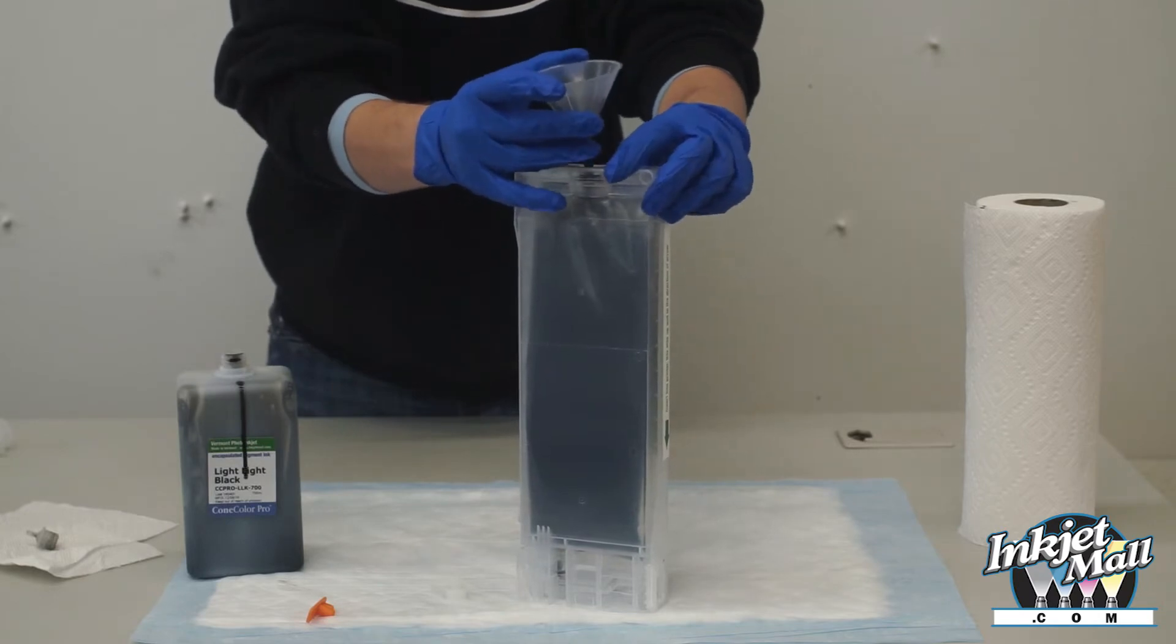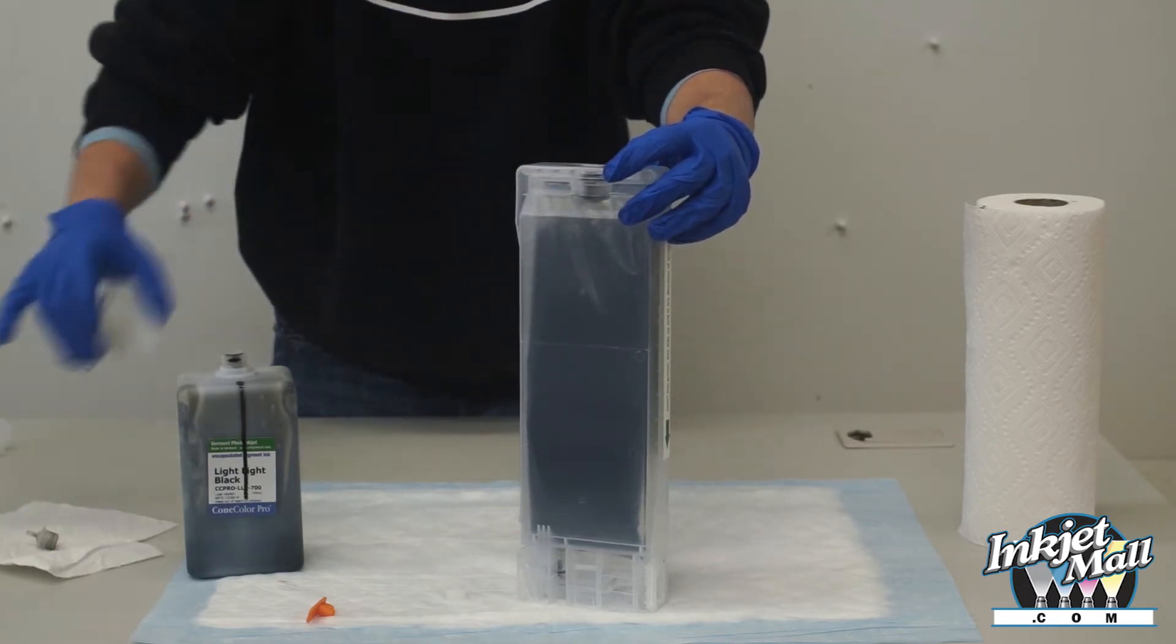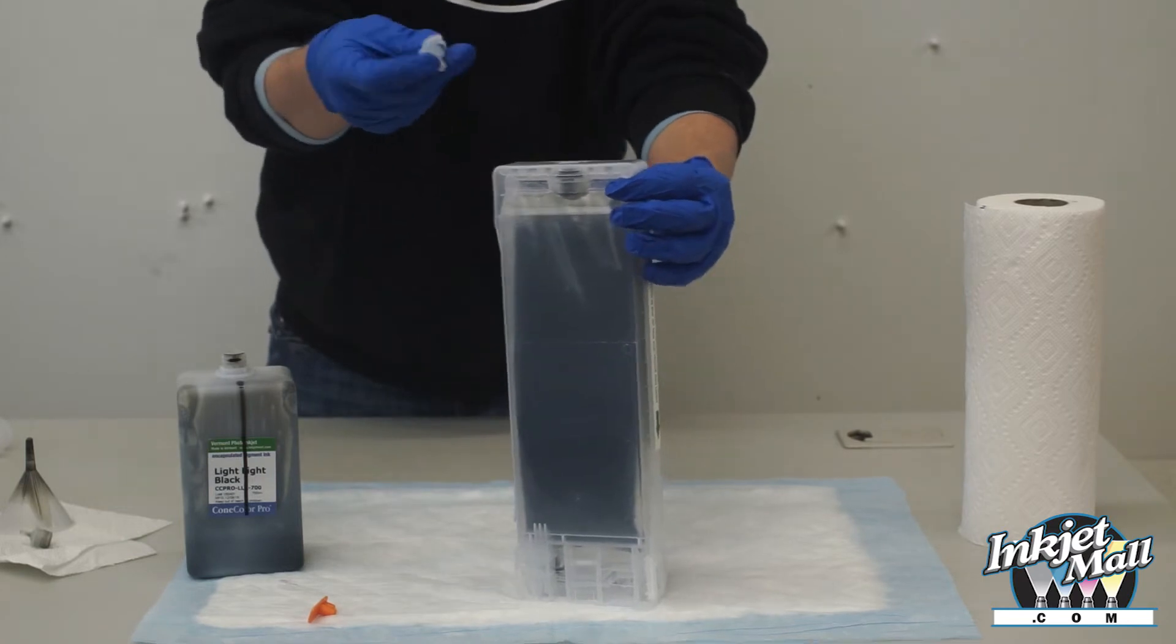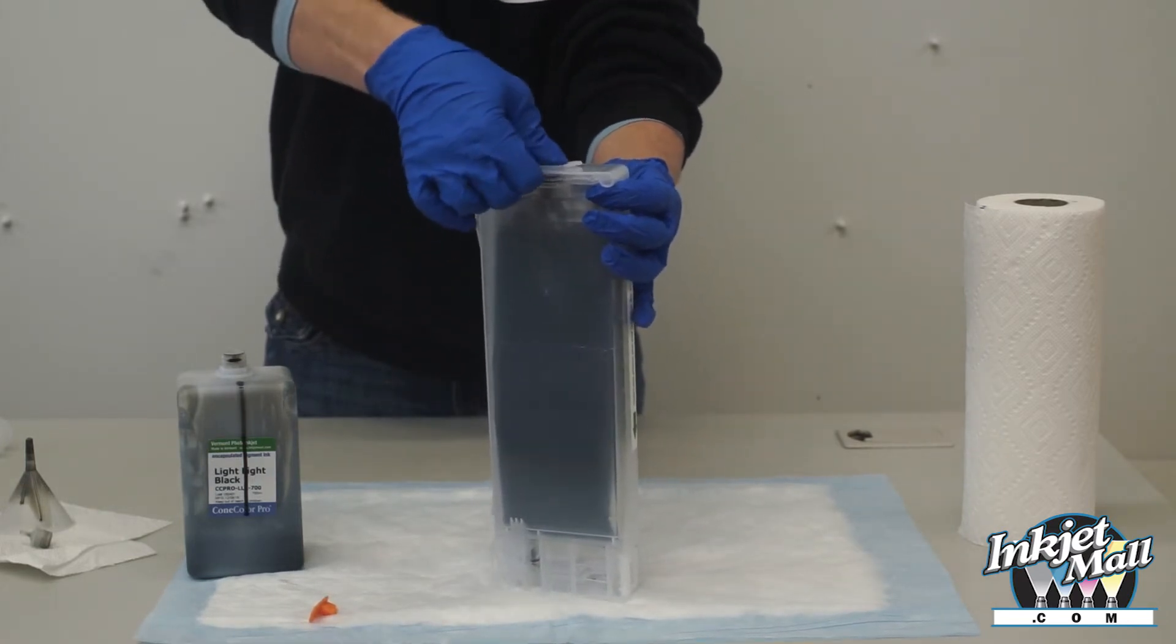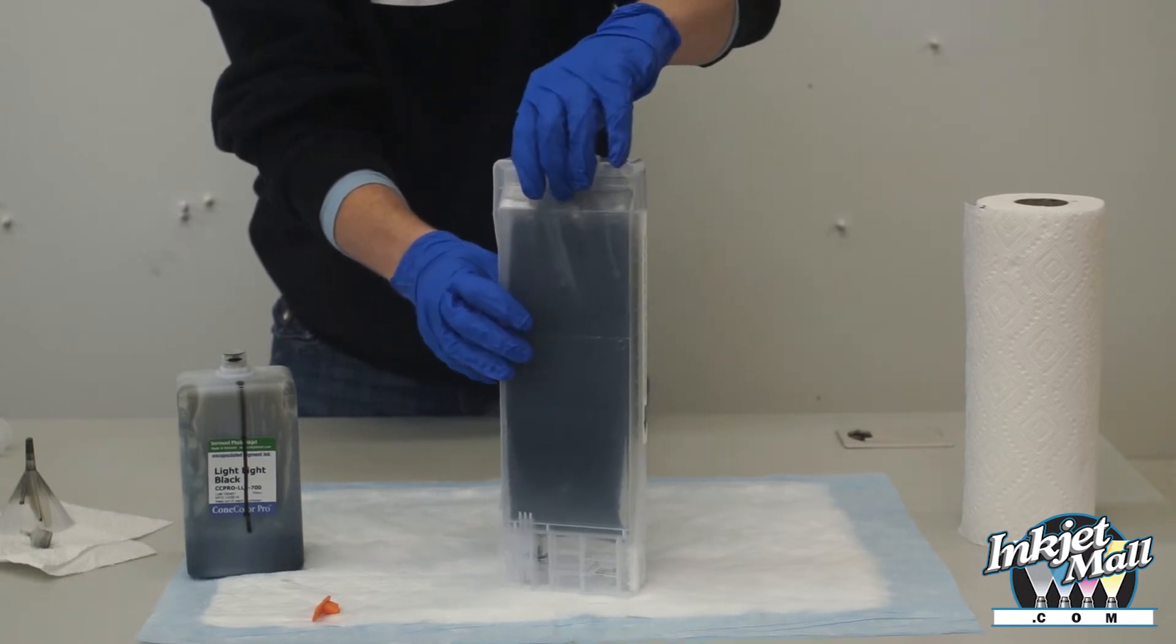Remove the funnel and insert the fill plug back into its hole. This should be firmly pressed into the hole so it is totally inserted. This ensures that no pressurized air leaks out of the cartridge when in operation.